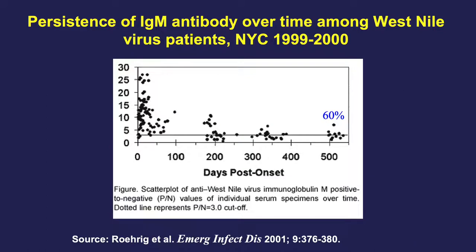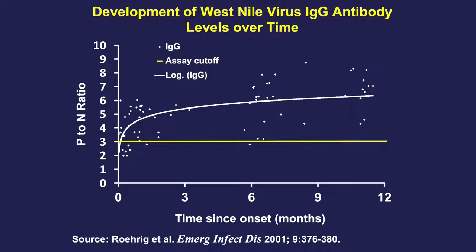During and after the West Nile outbreak in 1999 in New York City, we measured antibodies to West Nile virus among patients over time. Nearly all patients were producing IgM antibodies — those indicating early infection — soon after symptom onset, and that proportion decreased with time. However, even out to 500 days after illness onset, 60% of West Nile patients were still producing IgM antibodies. Looking at IgG antibodies — those indicating past infection — all of the West Nile patients were making IgG antibodies by 12 months after infection.